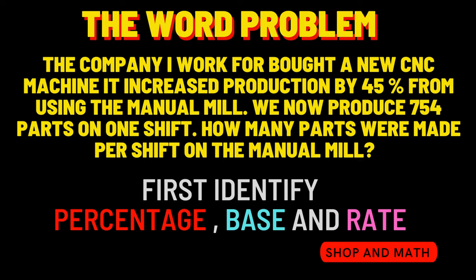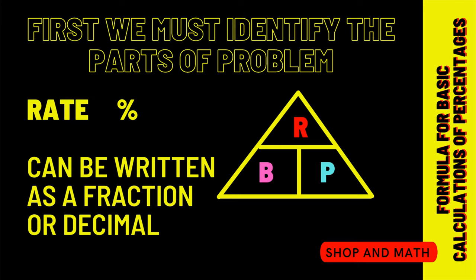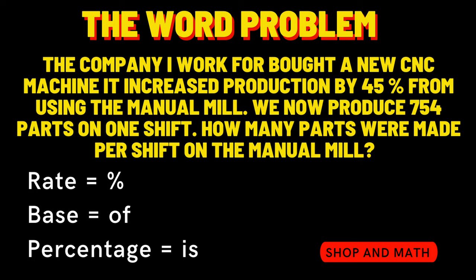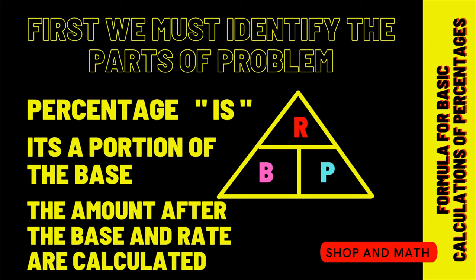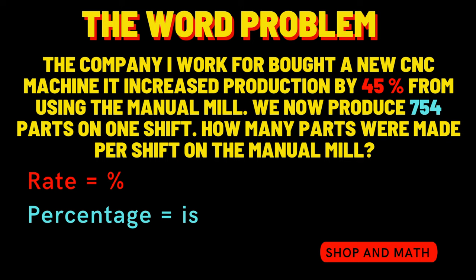Our first step in solving this problem is identifying the percentage, the base, and the rate. Rate is associated with the percent symbol and can be written as a fraction or a decimal. The rate is 45%. Percentage is associated with 'is' — it's a portion of the base, the amount after the base or the rate are calculated. In this case, the percentage is 754.